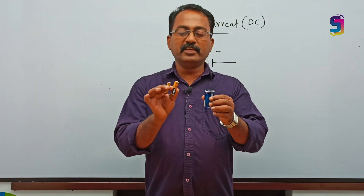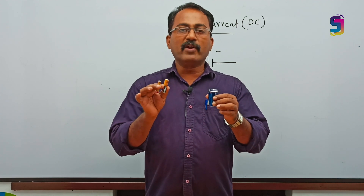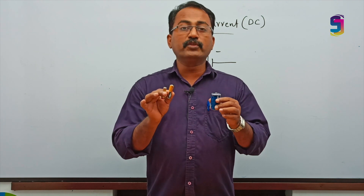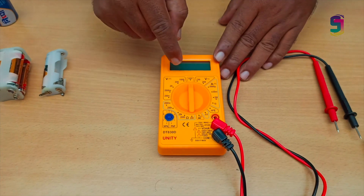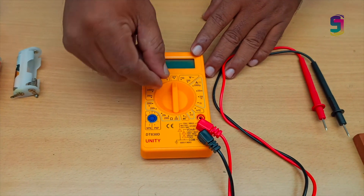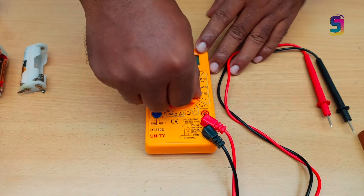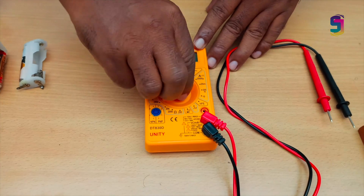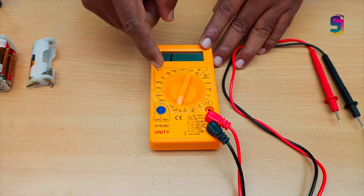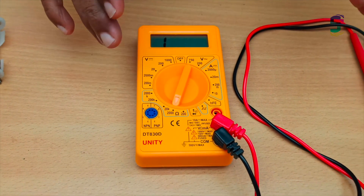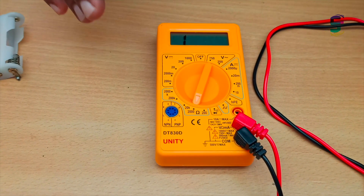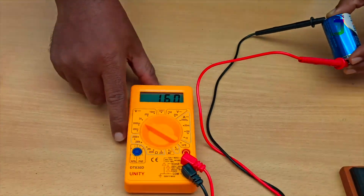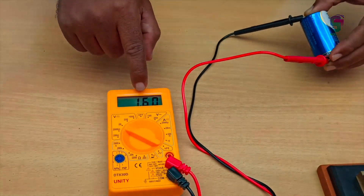The voltage of these dry cells is 1.5V. We can measure the voltage of a dry cell using a multimeter. In a multimeter, DC voltage can be measured, AC voltage can be measured, current can be measured, and resistance can be measured — that is why it is a multifunction meter. Using this multimeter, I am measuring the voltage of the cell. You can see it is 1.6V.